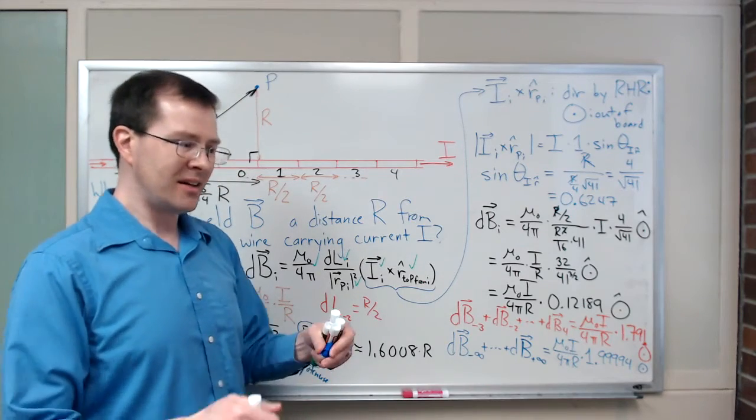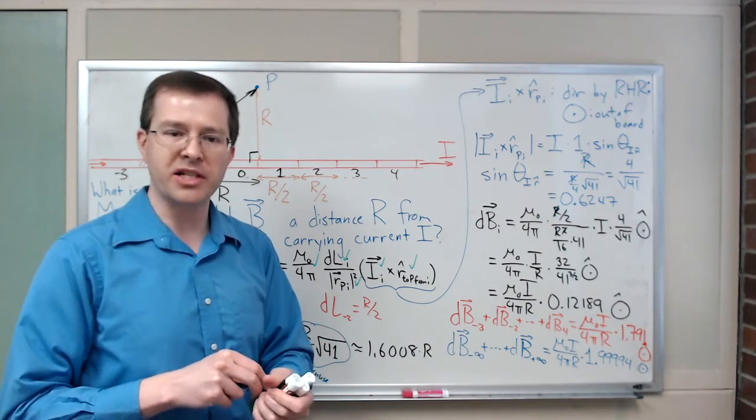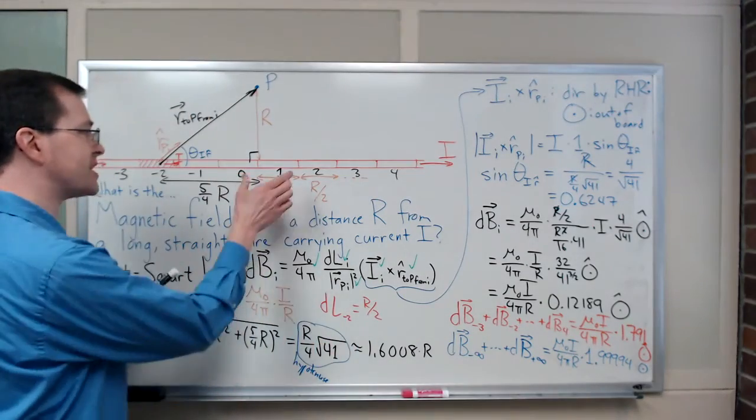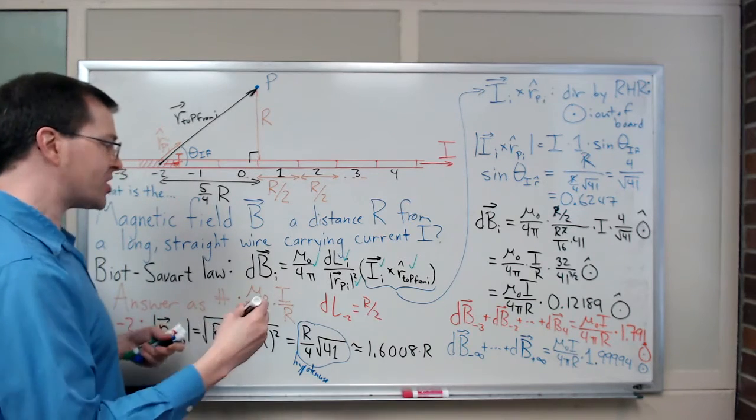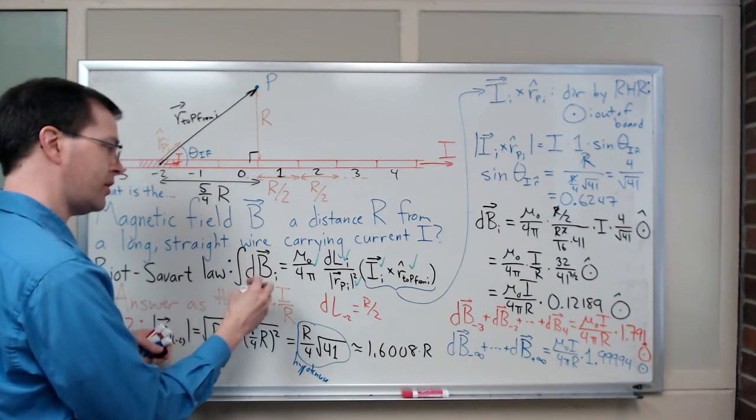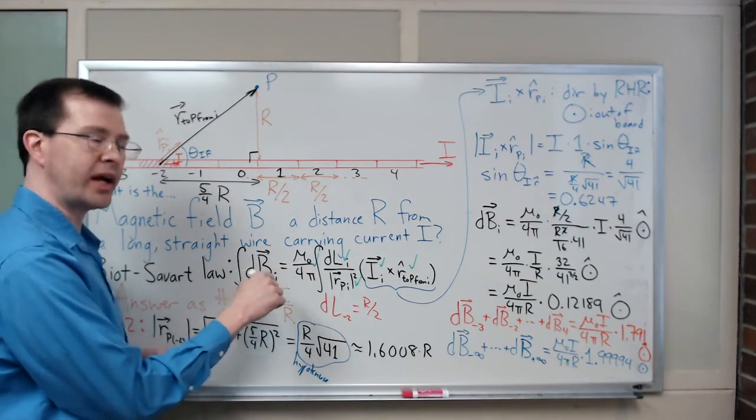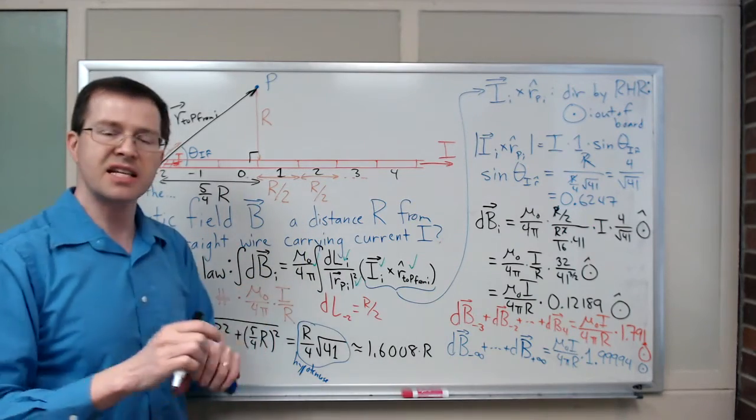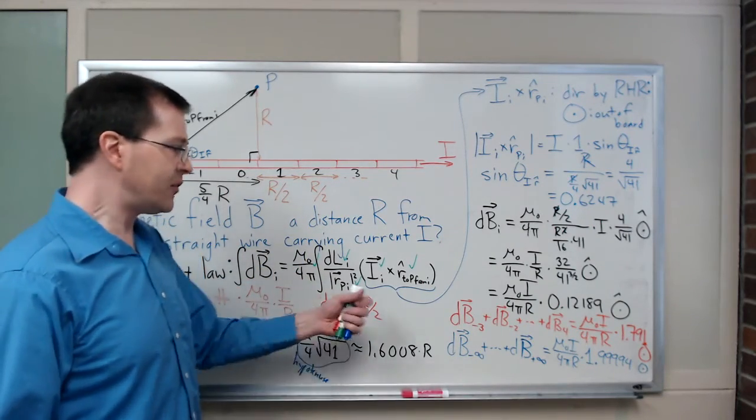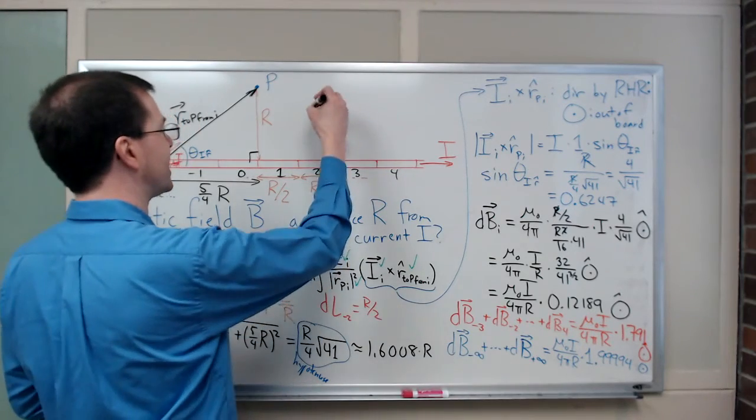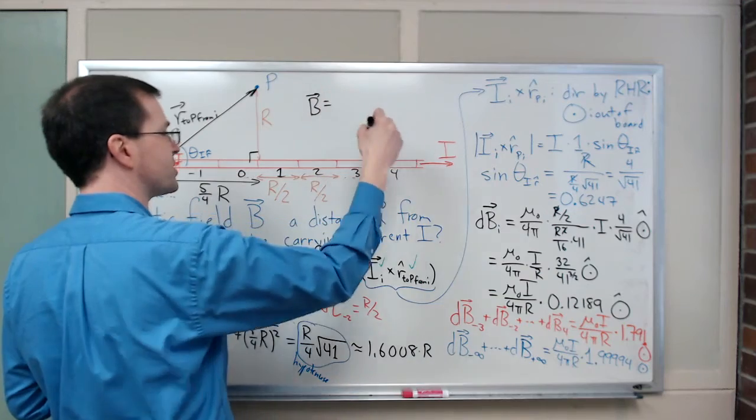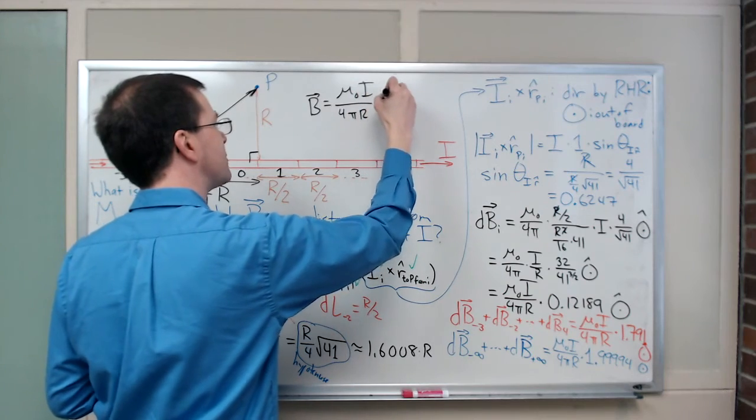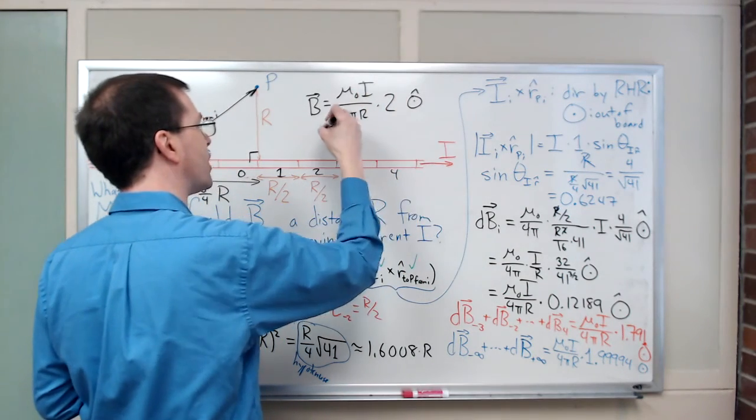And in fact, you may have already seen, you've probably seen the result in your textbook or something. You probably already know that if instead of breaking this up into segments of length R over 2, if I had actually done this as an integral of dB, integrating over infinitely small little dL's, breaking this up into infinitely small pieces, this isn't actually a bad integral to do, you can handle it. And if you do this integral, you'll find that you get exactly B equals 2 times that.